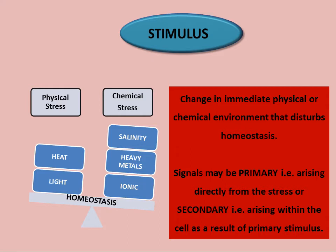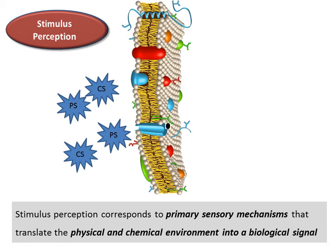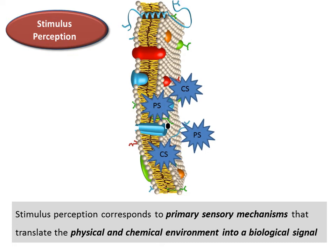Any change beginning in the environment and being perceived by the cell is considered the primary signal or primary stimulus. When this change is relayed further on the inner side of the cell — such as changes in metabolites or in phosphorylation states — so that the signal can be relayed to further compartments, that is called a secondary stimulus or secondary signal. Primary signals originate from environmental cues; secondary signals arise as a result of primary stimuli. Stimulus perception is basically the conversion of any physical or chemical stimulus into a biological signal.